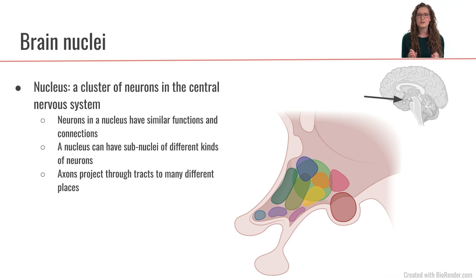In the brain, a nucleus is a cluster of neurons within the central nervous system. And neurons that are in a nucleus, that are in this cluster, they tend to have similar functions to each other and they have similar connections.